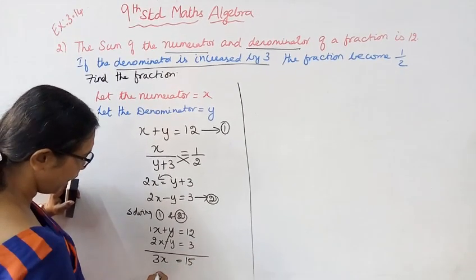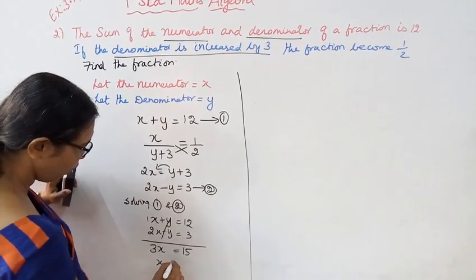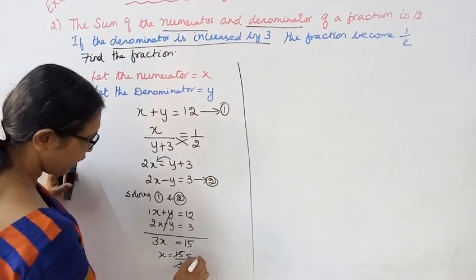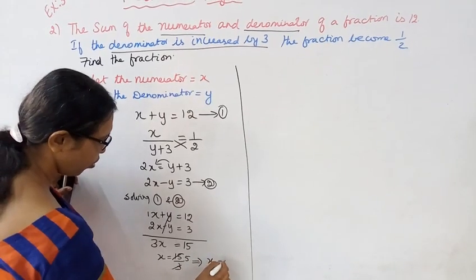3x equals 15. x equals 15 by 3. 3 fives are 15. That implies x equals 5.